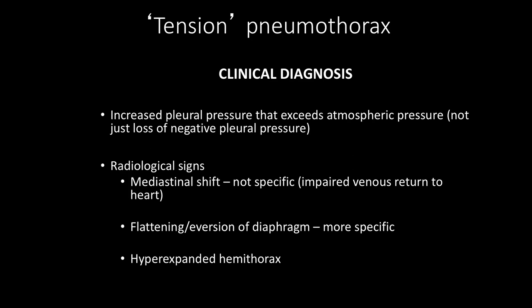The radiological signs include mediastinal shift, but don't forget that this can be seen in pneumothorax without tension. The mainstay radiological sign is flattening or eversion of the diaphragm, which is more specific. Ideally this diagnosis should be recognised clinically without the need for a chest x-ray, but occasionally chest x-rays or CT scans do reveal the tension pneumothorax.